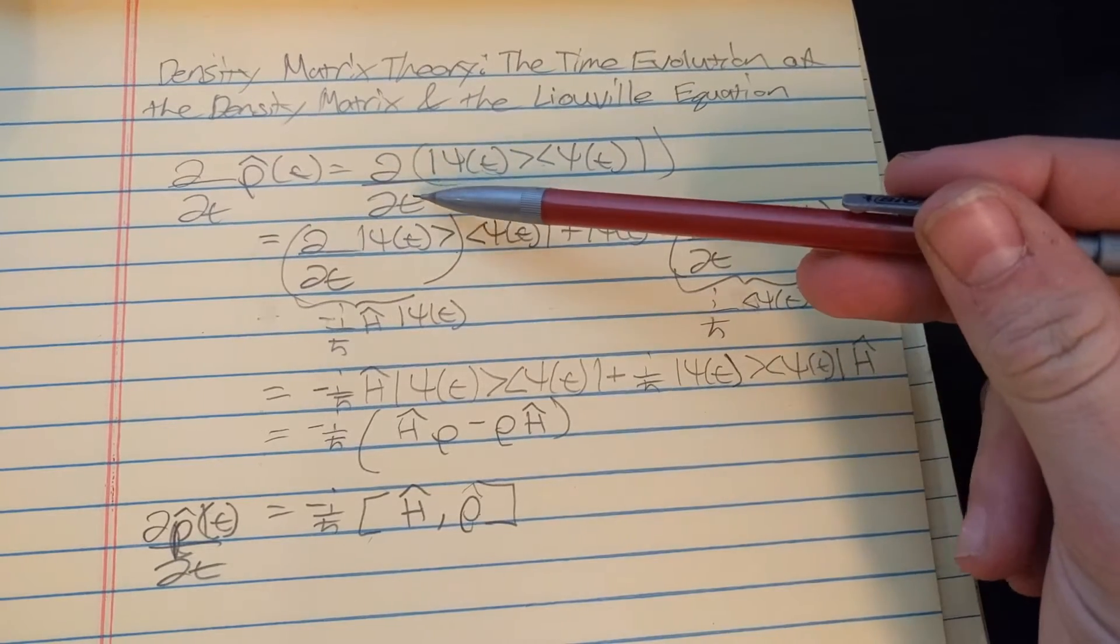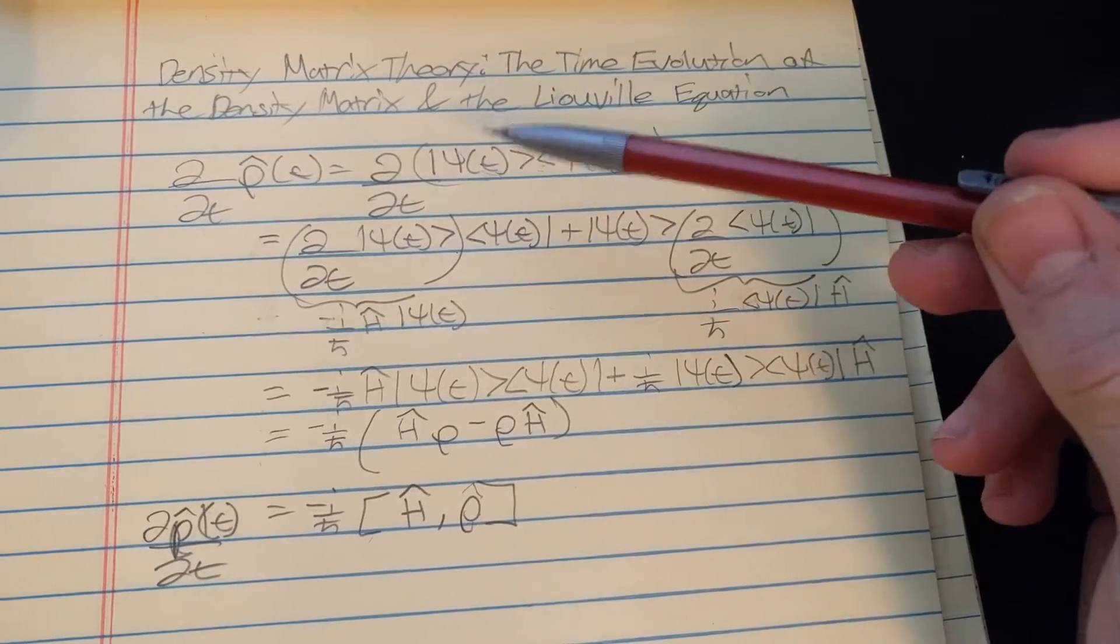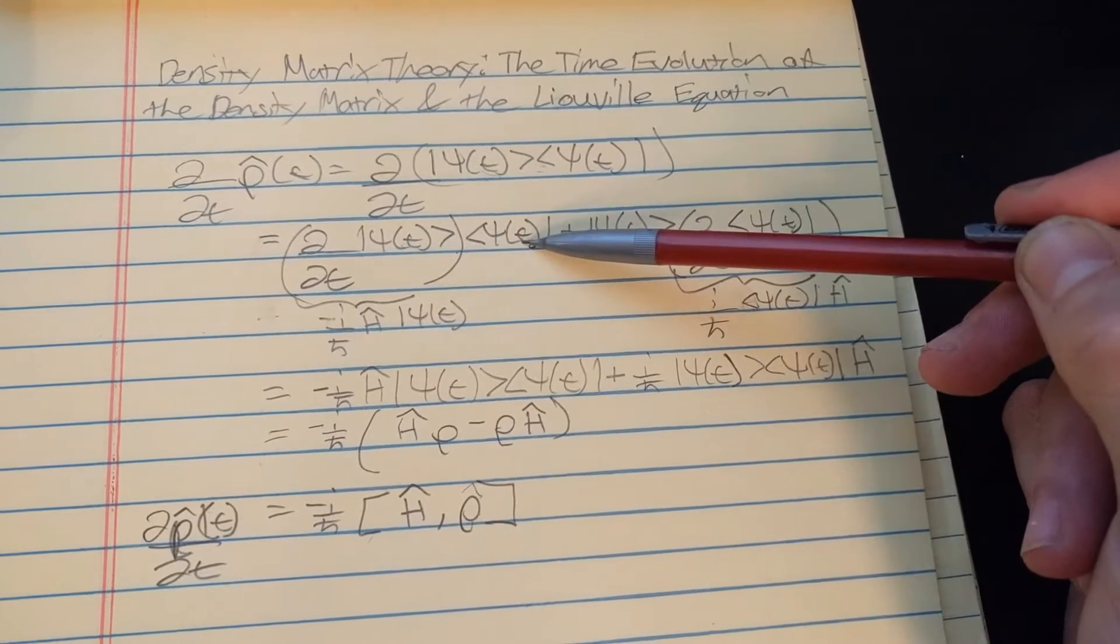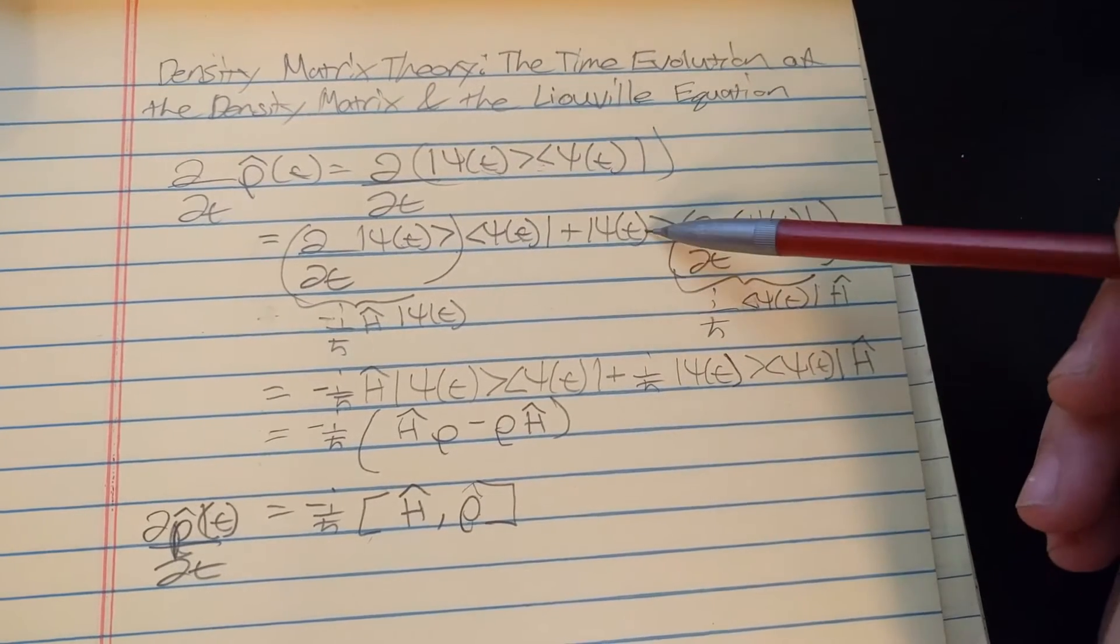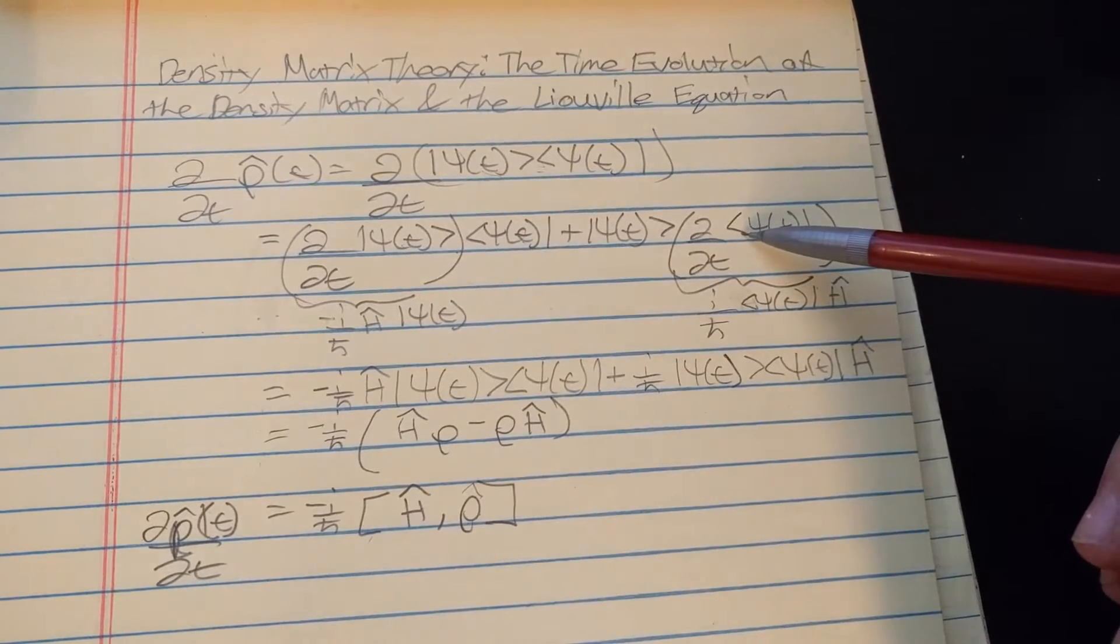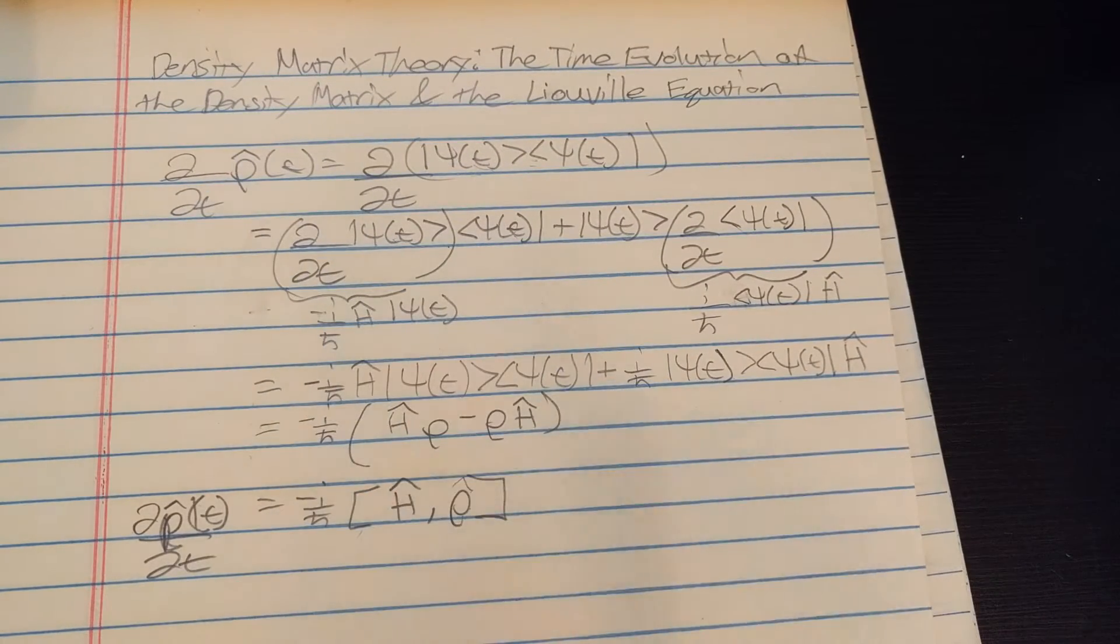So we have the time derivative of a product is equal to the time derivative of the first component times the second component plus the first component times the time derivative of the second component. And then we use the time dependent Schrodinger equation.